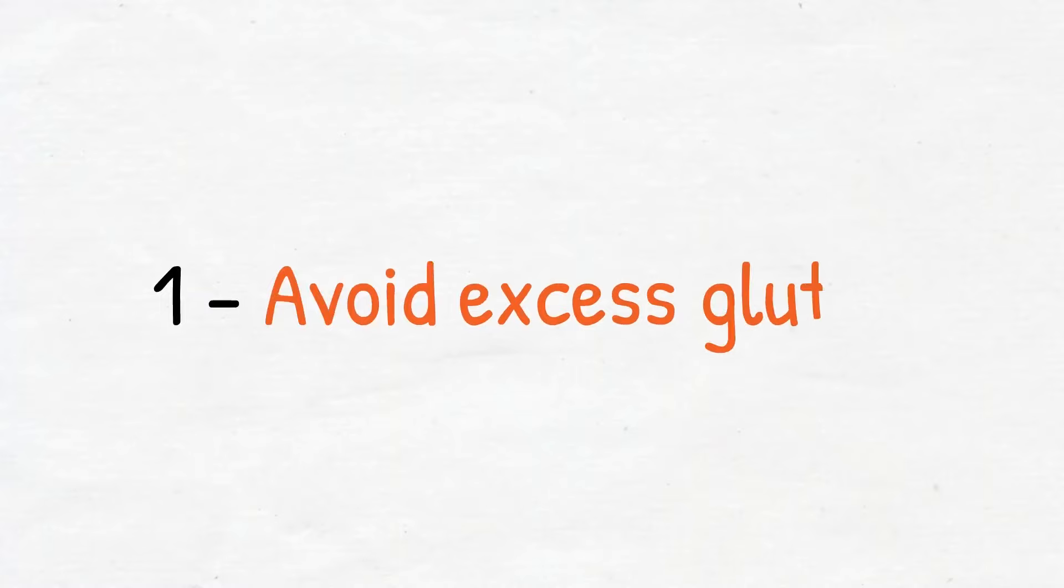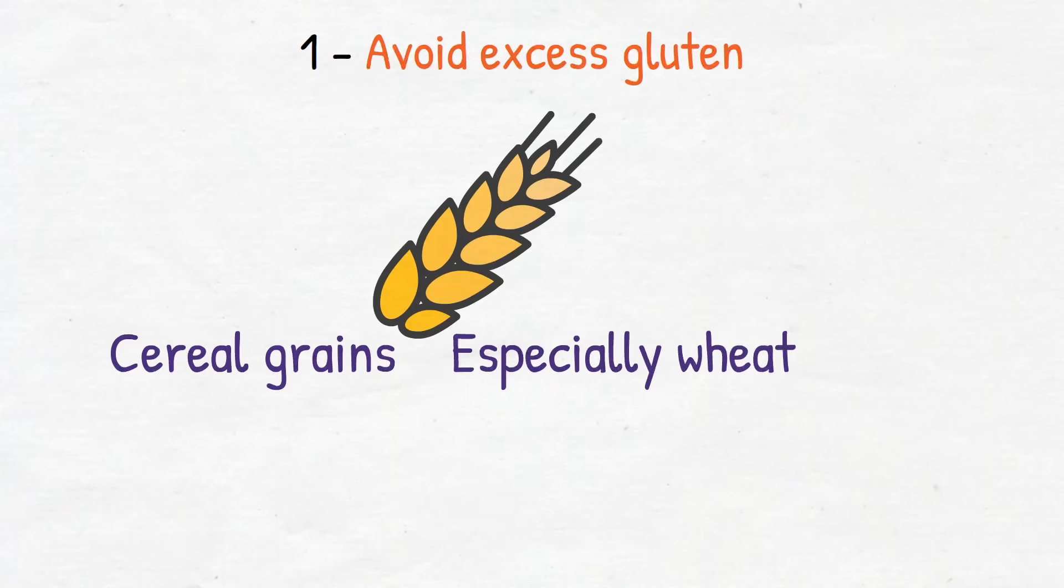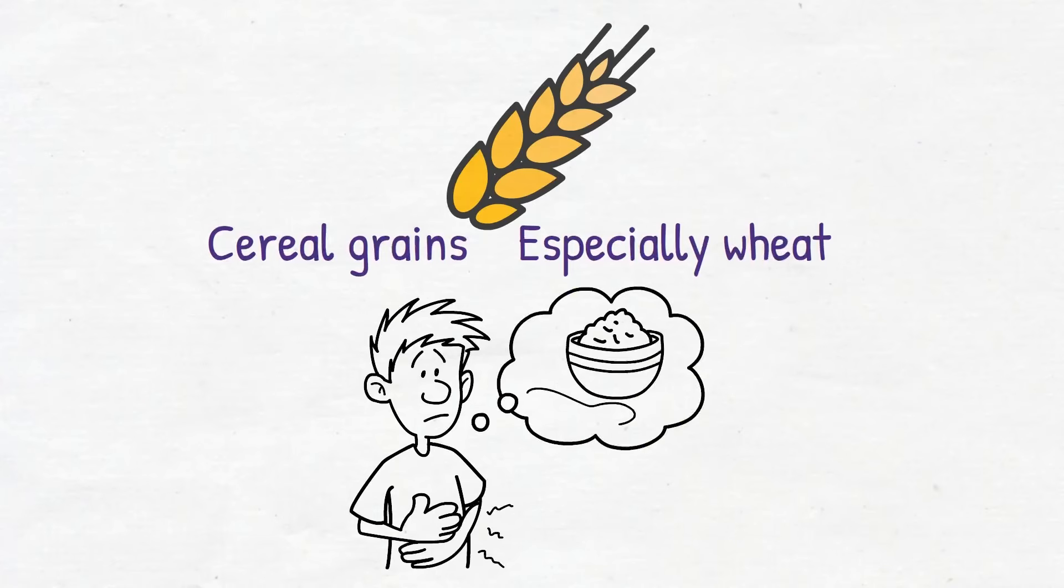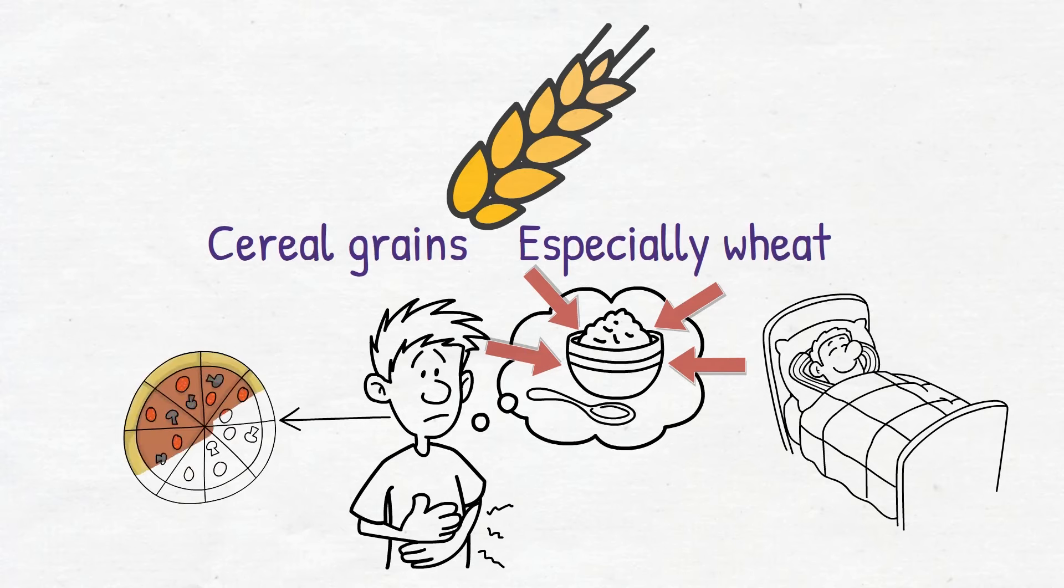Number one, avoid excess gluten. Gluten is basically a mixture of two proteins present in cereal grains, especially wheat. It interferes with the absorption of nutrients and causes digestive problems. To find out if you are gluten sensitive, stop eating gluten for a couple of weeks and see how you feel. If you have more energy and sleep better, you'll probably have some level of gluten intolerance. If you are constantly exhausted, it's time you stop eating wheat products such as bread and pizza.